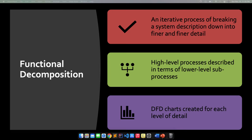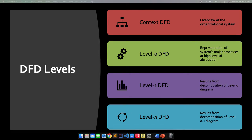Since we're talking about functional decomposition, we need to talk about the DFD levels. These are the levels of DFD following the functional decomposition. The data flow diagram begins with a single process that is actually the system. We call this diagram a context DFD, or context data flow diagram. The context diagram is actually an overview of the organizational system. You will see here who are the entities, or who are the users who interact with our system.